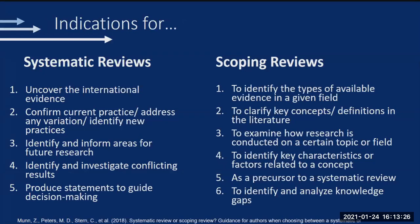Indications for a systematic review include: uncovering the international evidence, confirming current practice, addressing variations or identifying new practices, identifying areas for future research, investigating conflicting results, and producing statements to guide decision making. Systematic reviews are at the top of the evidence-based pyramid — the information we rely on to make healthcare decisions. Scoping reviews are intended to identify types of available evidence in a given field, clarify key concepts or definitions, examine how research is conducted on a topic, identify key characteristics related to a concept, serve as precursors to systematic reviews, and identify and analyze knowledge gaps.